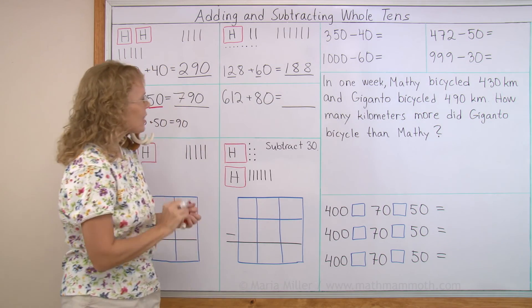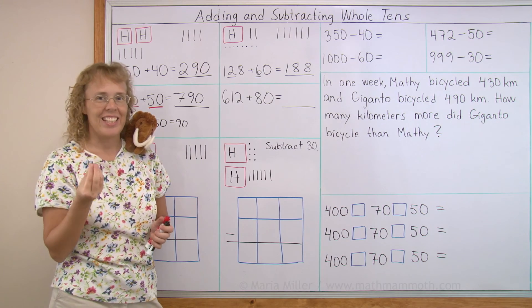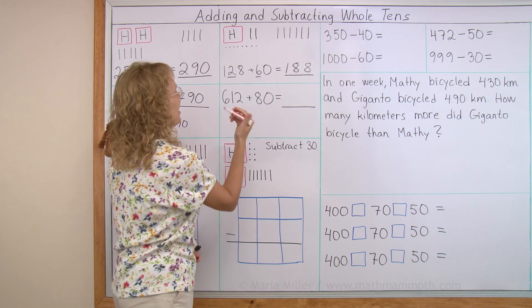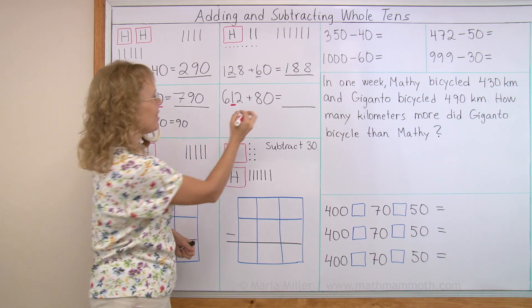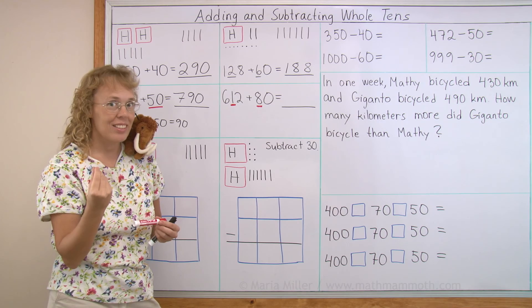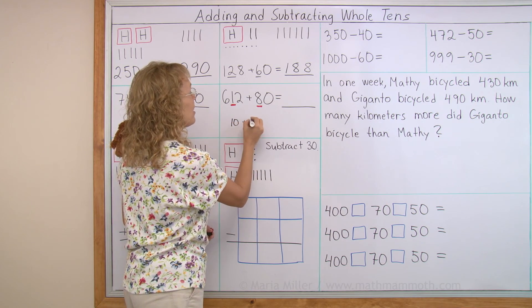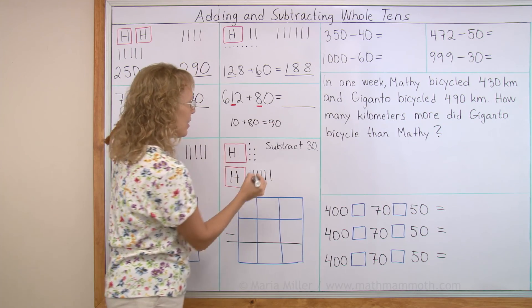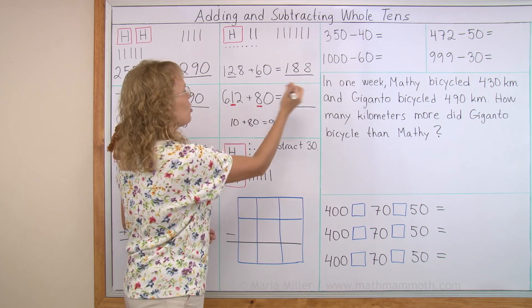Now how about here? 612 plus 80. Again, we are adding eight tens, eight whole tens. So look here at the tens digit. There's one ten. And here we have eight tens. One and eight makes nine tens, right? Your helping problem is here. 10 and 80 makes 90. And then you have the 600. And then you have the nine tens. And then you have the two.